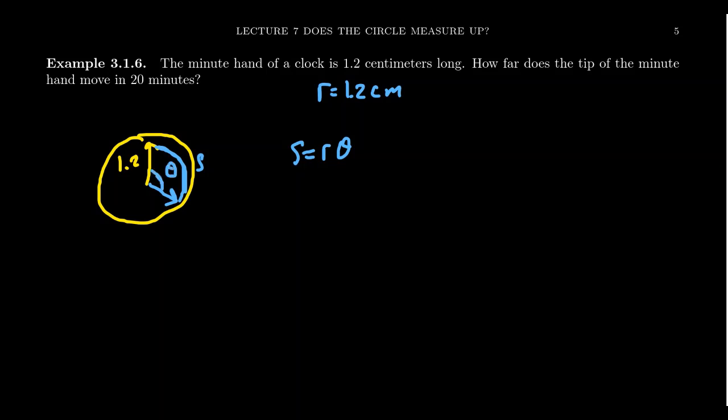To find the arc length, S equals R theta, we need to know the radius, which we have. But we also need to know the angle measure. What's our clue about the angle measure here? The clue is time. On an analog watch or clock, 20 minutes elapse, and that's our measurement of angle. That's an unorthodox way of measuring an angle, but it makes sense.